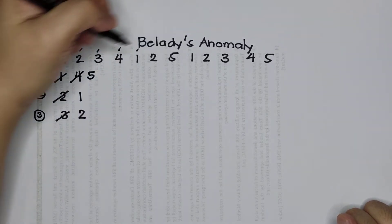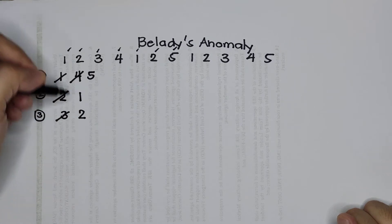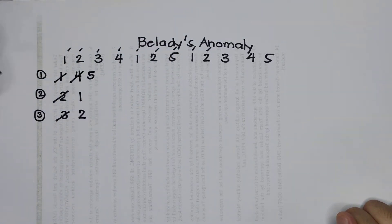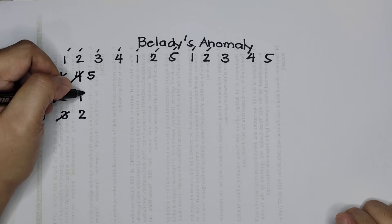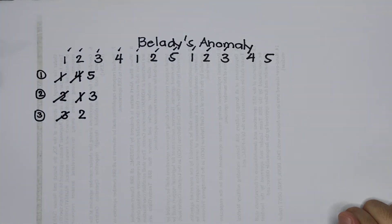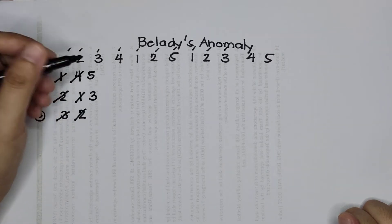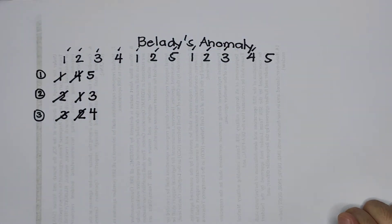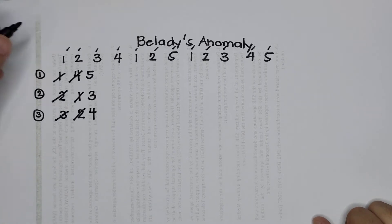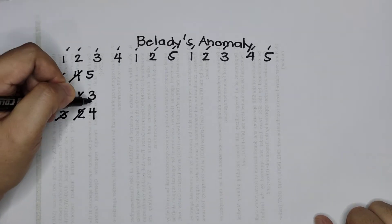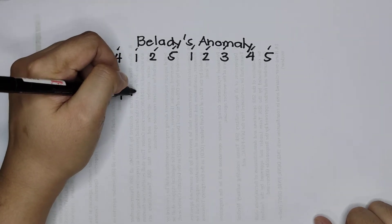Next we have three — replace the oldest frame, which is in frame number two, which is one, and replace it with three. Next we have four — replace the oldest, which is in frame number three, so replace it with four. Next we have five, and five is already in one of the page frames. So how many page faults does this reference string result? We have nine page faults.